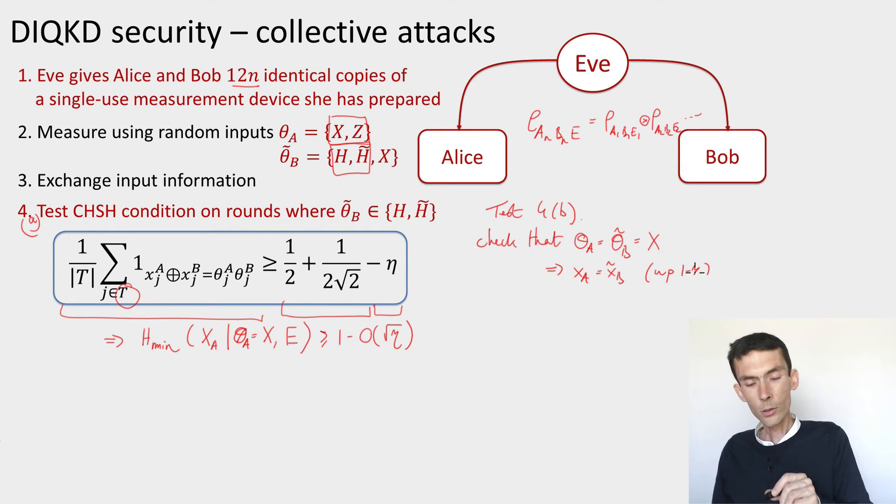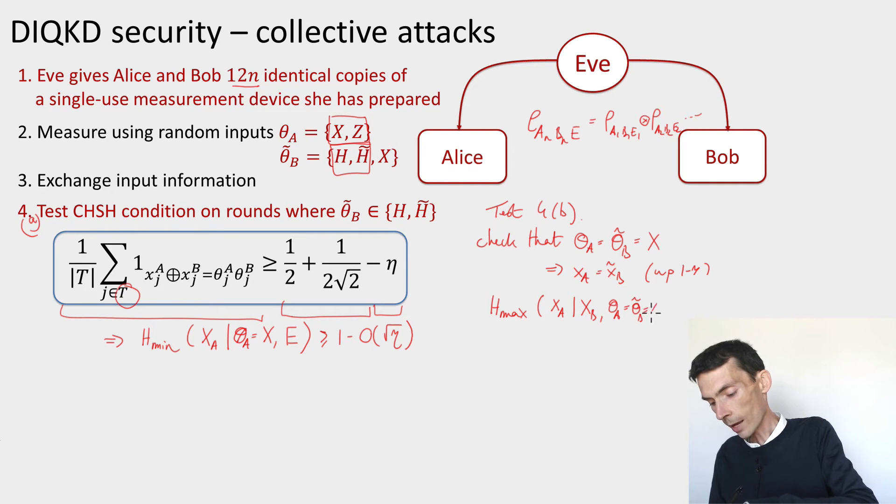The conclusion of that, we can conclude that the max entropy, this is something that's going to be important just for the information reconciliation part of the protocol. The max entropy of Alice's outputs conditioned on Bob's output and the fact that they use the same basis, so theta_a equals theta_tilde_b equals x, this will be of order eta.